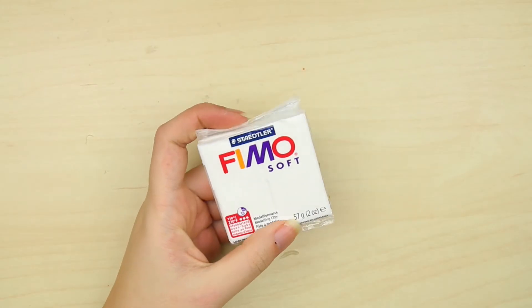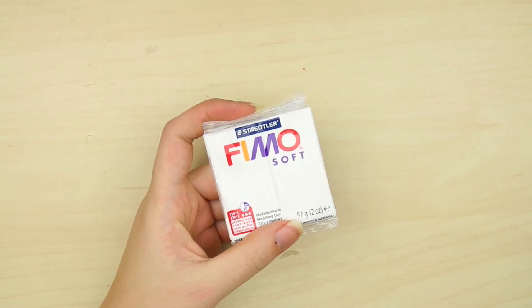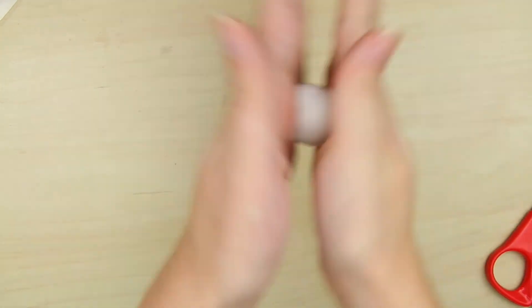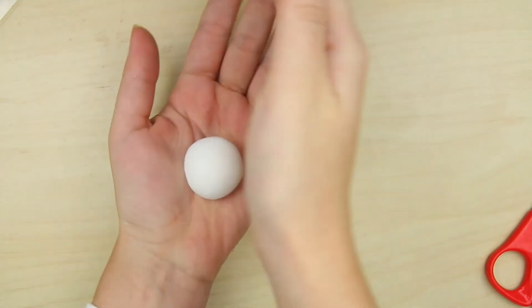Now to the egg white. For this I use some white Fimo clay so it's extra durable. Create whatever shape that you want, but make sure it's big enough for your egg yolk.